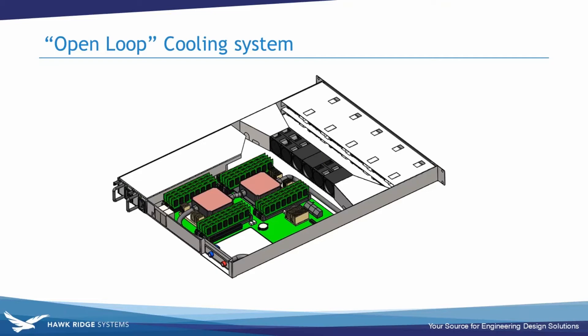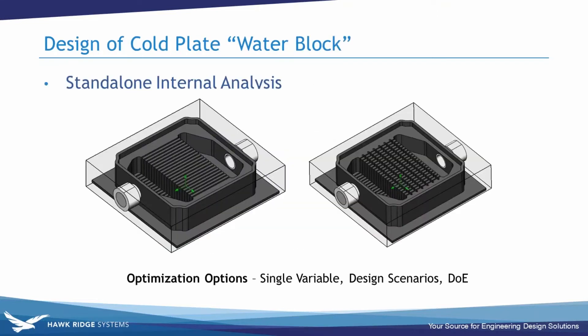Now let's move to liquid cooling setup. First, I want to look at an open loop system where the coolant pump and radiator are external to the server rack, and then we'll look at a closed loop system where the pump and radiator are within the server. Before designing the whole system, I want to look at the subsystem level first — specifically designing the water block for heat exchange to the CPU using liquid coolant. This procedure is also applicable to designing a heat sink for an air-cooled system; it's a very similar workflow at the part level.